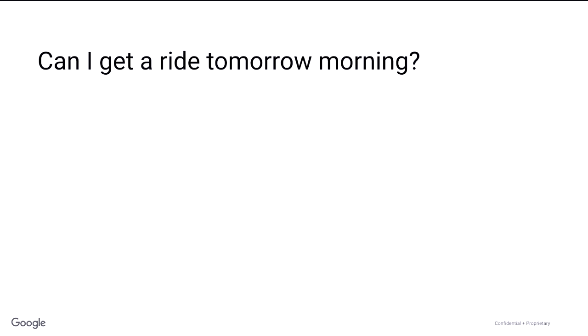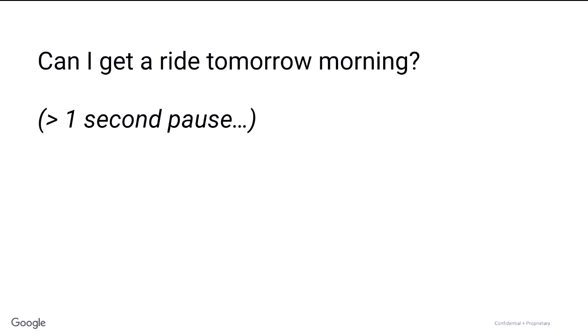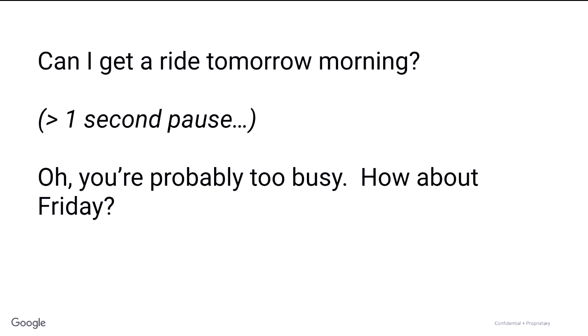Think of another example. If I ask you, can I get a ride tomorrow morning? Turns between humans are super fast — blink of an eye fast, 200 milliseconds in general between when I speak and you speak. If it's longer than that, like more than a second goes by after I ask you this question, I know something's probably up — you probably don't want to give me a ride but don't want to tell me that. So I'll probably take another turn and say something like, oh, you're probably too busy, how about Friday? We are using body language, eye gaze, tone — all these things that most of our computer systems do not yet have.